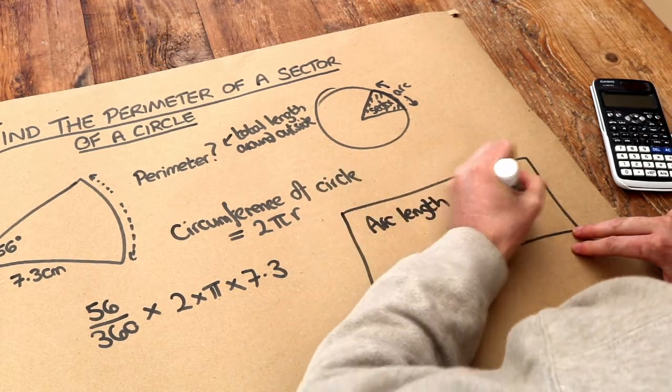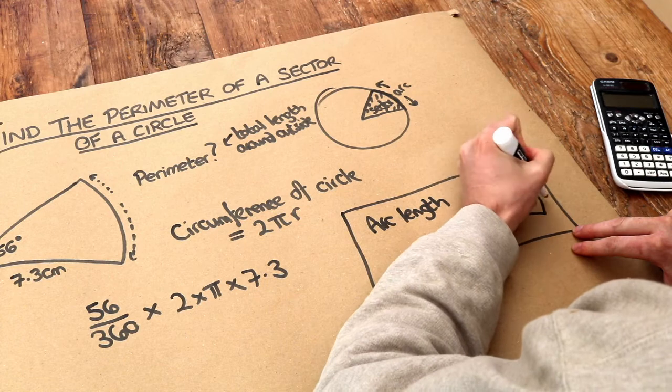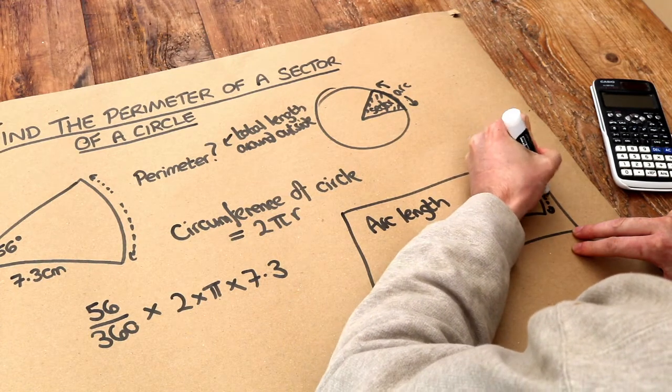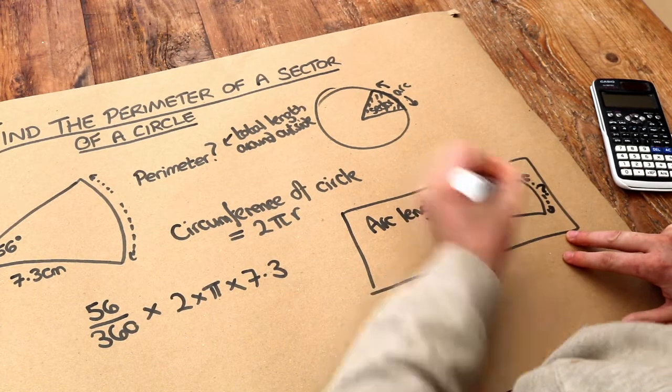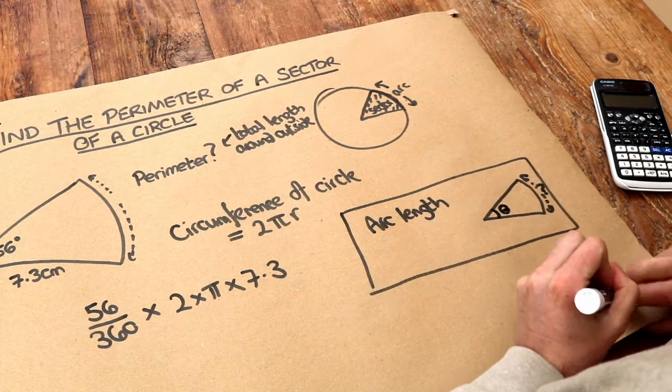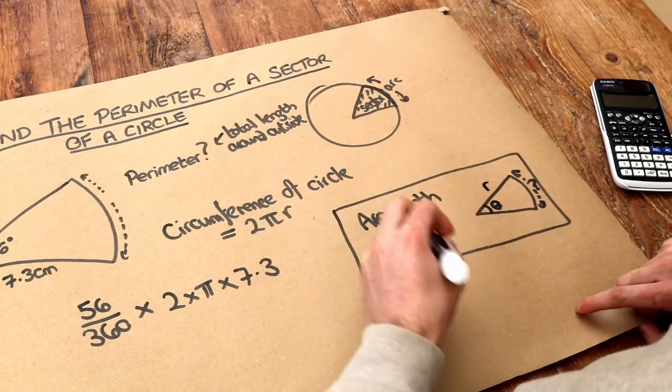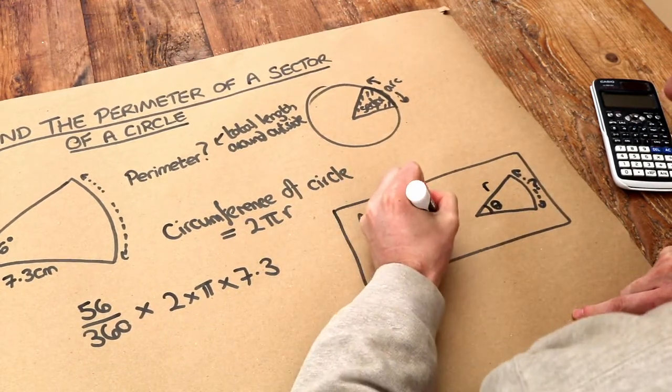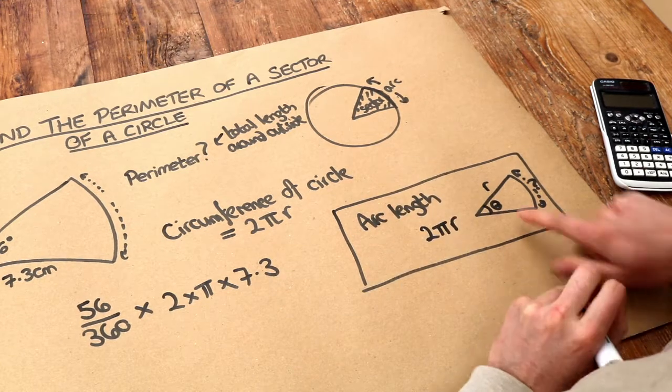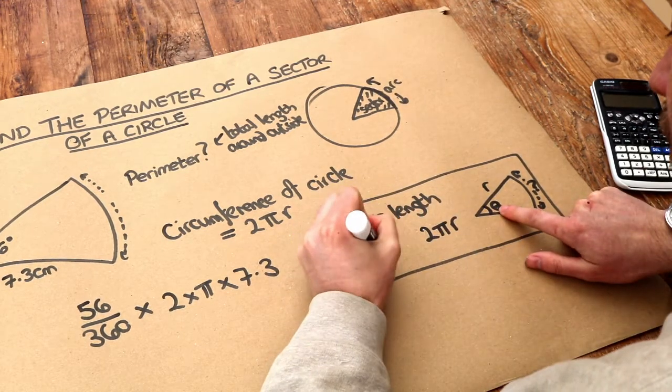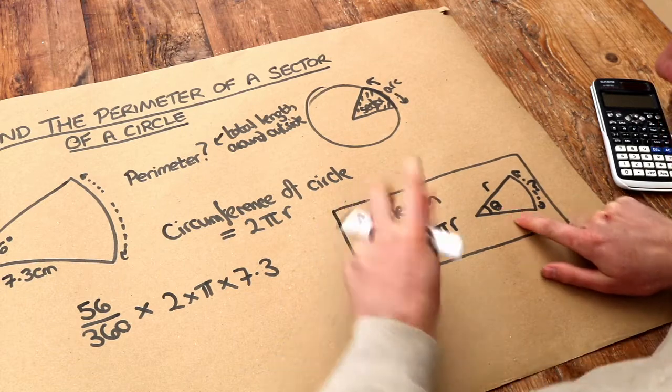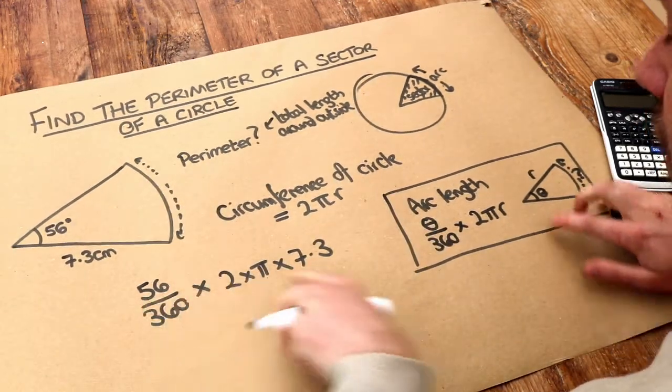Arc length. So the arc length is this: where we've got this angle at the centre, let's call it theta, and a radius r. We start with the circumference of a full circle, and then we do theta/360ths of it. Depending on what theta is. In this case, theta is 56.